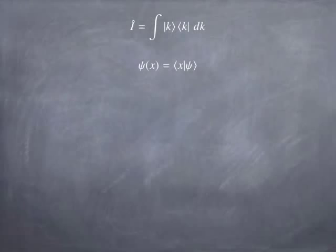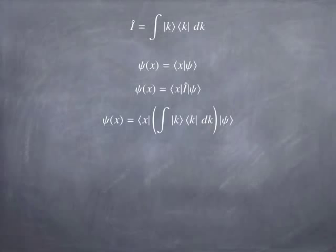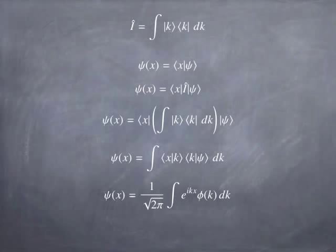Let's apply that idea. Starting with psi of x — that's the bra x acting on the ket psi — I just insert the identity, but I want to expand the identity as the integral over the k basis vectors. Bringing x and psi in, I can rewrite this as x on k times k on psi. What is x on k? It's 1 over the square root of 2 pi times e to the ikx. What is k on psi? That's phi of k. Putting it all together, I get the inverse Fourier transform. In other words, the inverse Fourier transform is simply what you get by sticking the identity in between x and psi in the expression for psi of x.